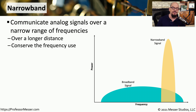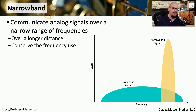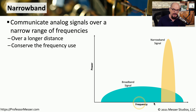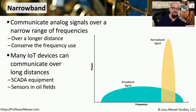If the embedded device is not using a cellular network, it may be using frequencies over a narrowband connection. This allows communication across a very narrow range of frequencies, and it's very common to send this communication over very long distances. As you can see in this picture, a narrowband signal uses a smaller portion of the frequency bandwidth than a broadband signal, allowing many different communications within a single set of frequencies.